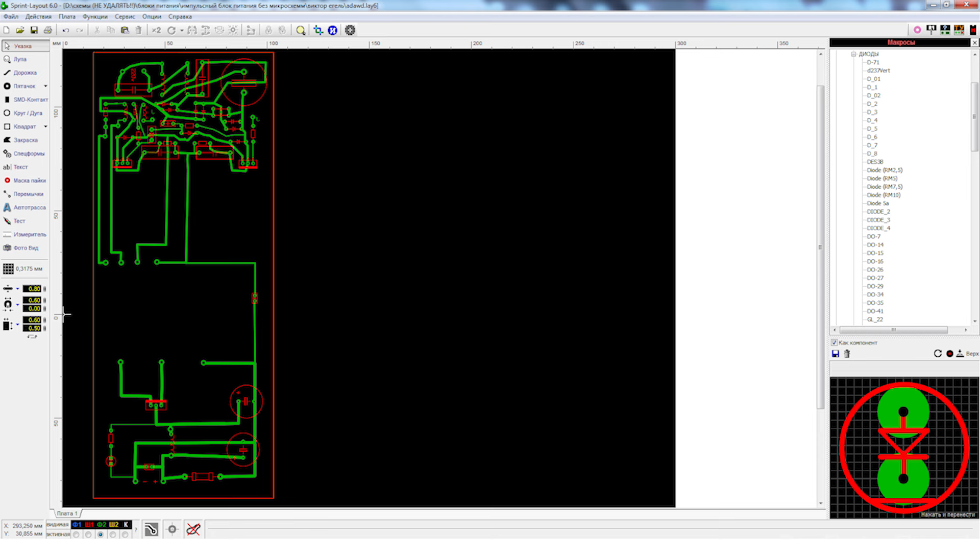We see the tracks connecting all the elements as if through the board. They are on the other side. All details are marked in red. You can enter each of them with two clicks and see its denominations.